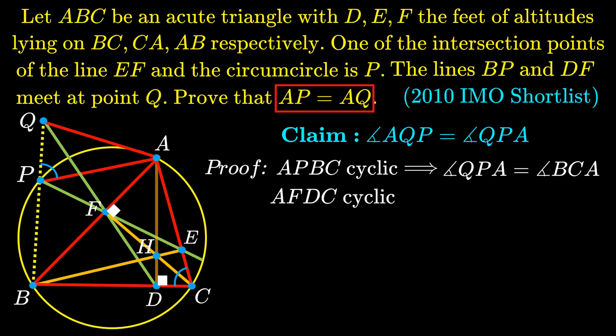And in fact, AC is the diameter of the circumscribed circle of the cyclic quadrilateral AFDC. So the fact that the quadrilateral AFDC is cyclic actually gives us the angle DCA, which is the angle BCA, is the same as the angle QFA.